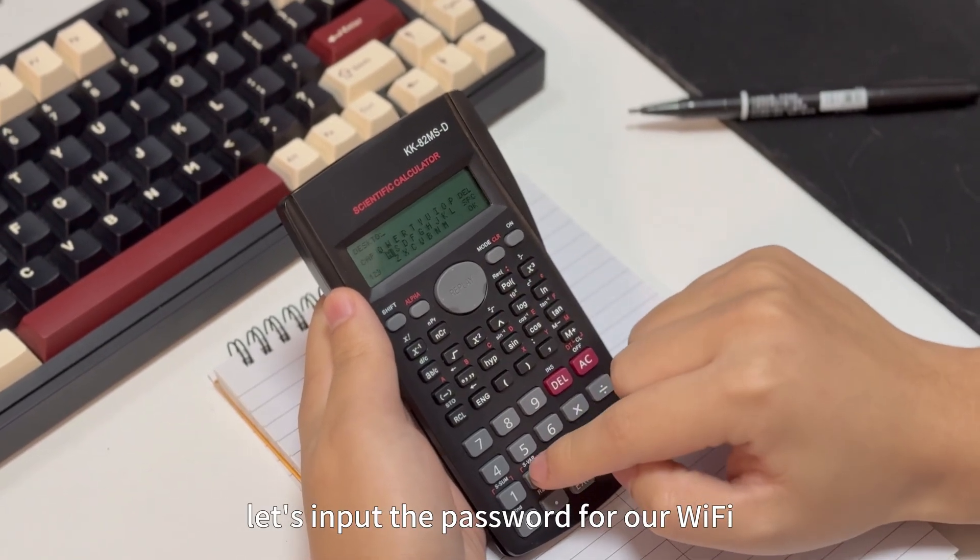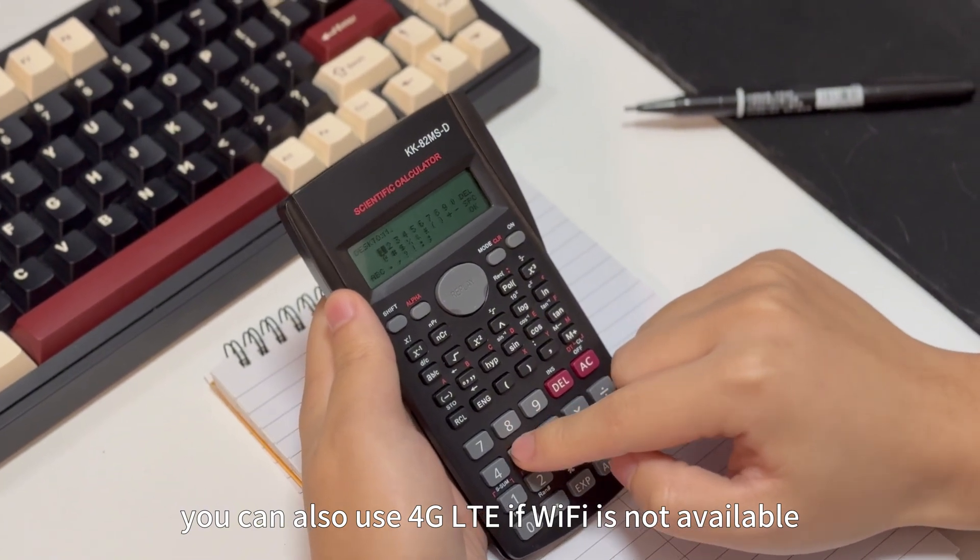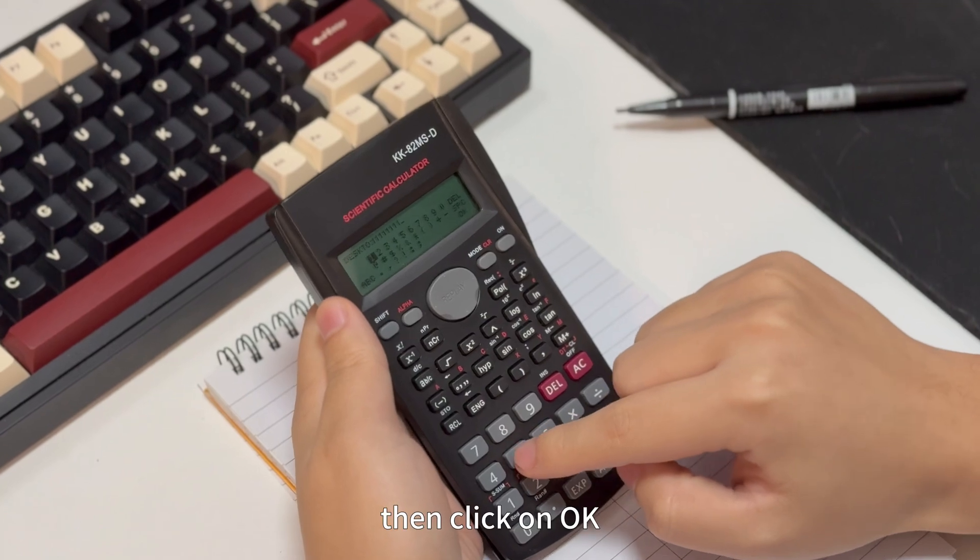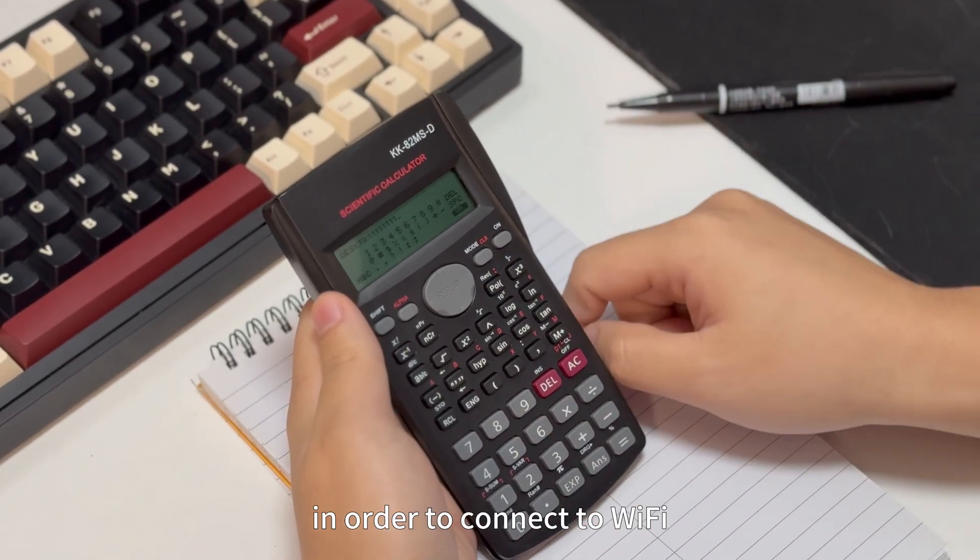Let's input the password for our Wi-Fi. You can also use 4G LTE if Wi-Fi is not available. Then click on OK. Wait for the device to restart in order to connect to Wi-Fi.